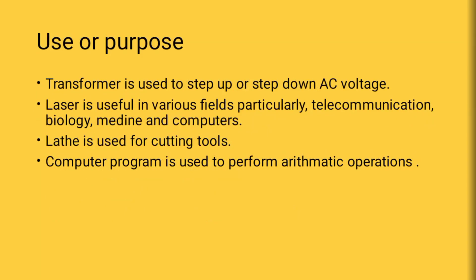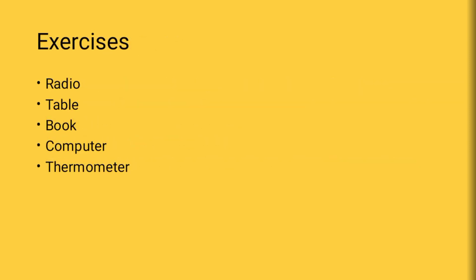Now the third part: the use or purpose of the object. A transformer is used to step up or step down AC voltage. Laser is useful in various fields, particularly telecommunication, biology, medicine, and computers. A lathe is used for cutting tools. A computer program is used to perform arithmetic operations. Every object or gadget is used for a certain purpose that you must mention.